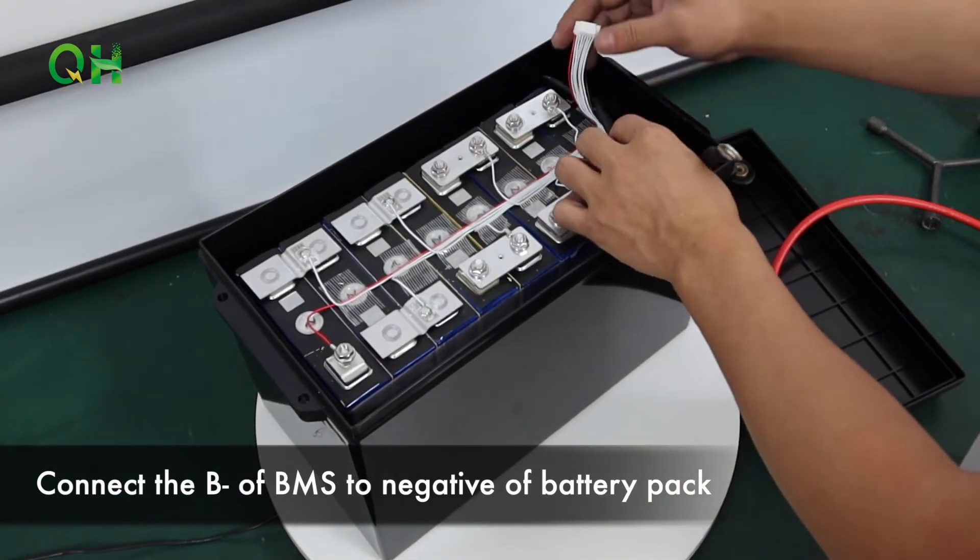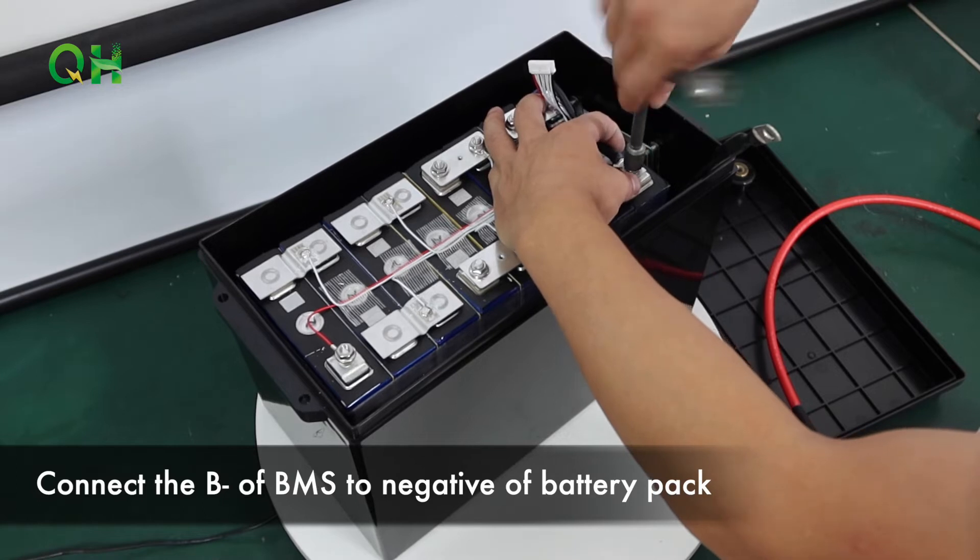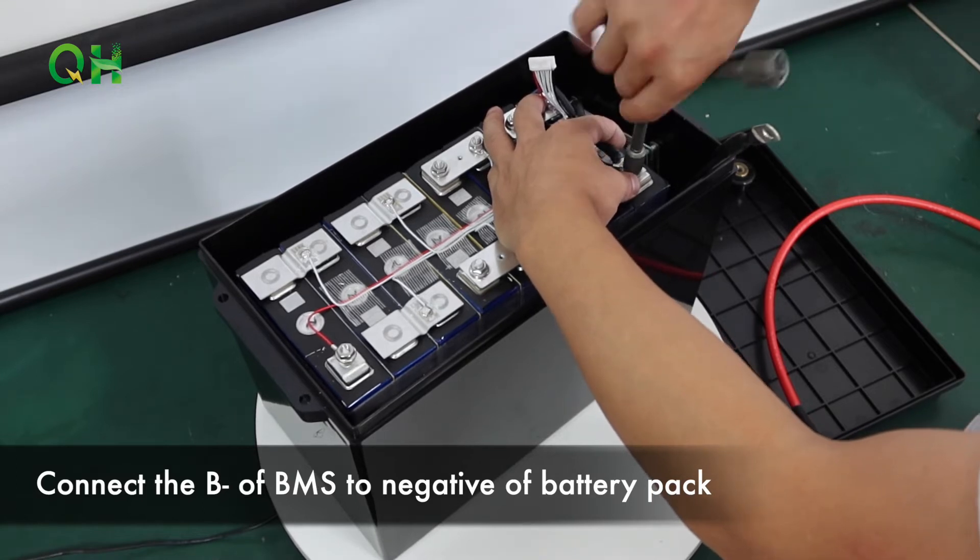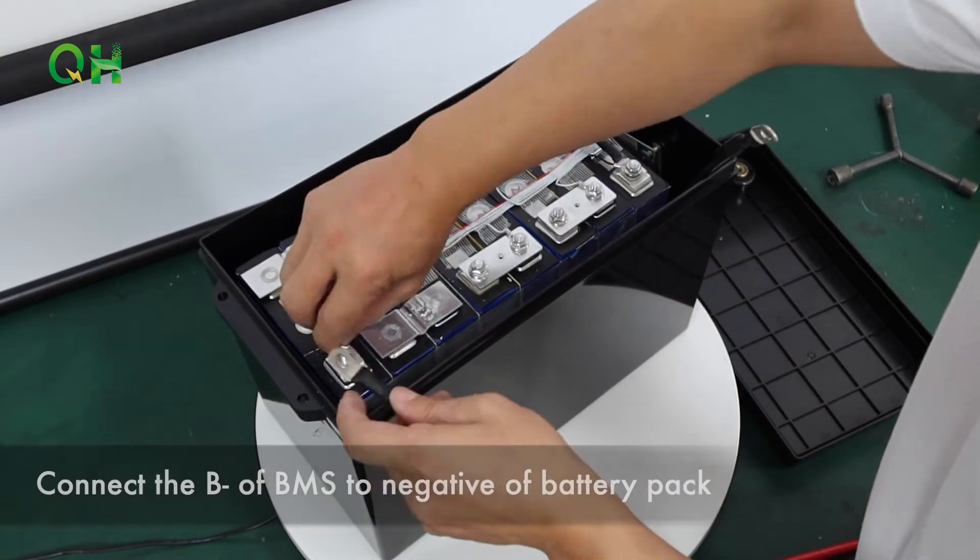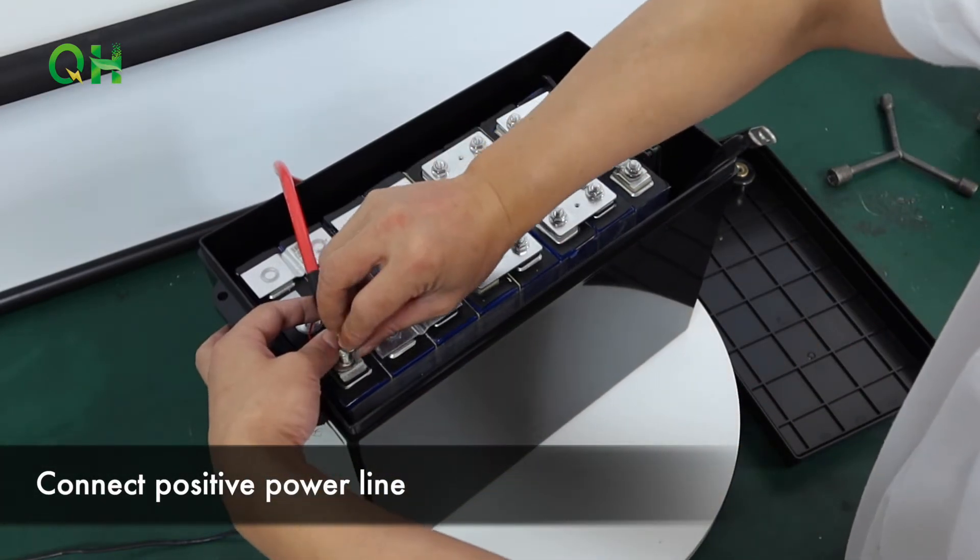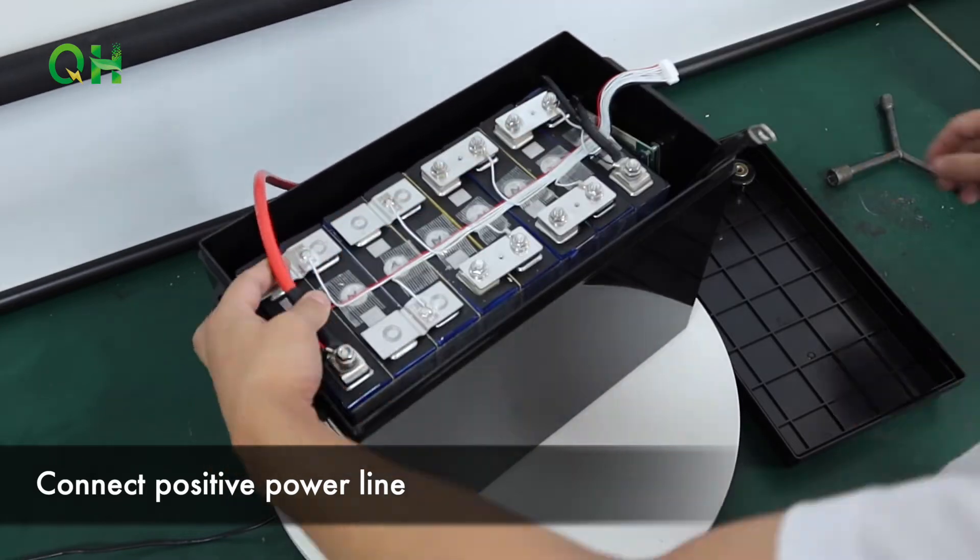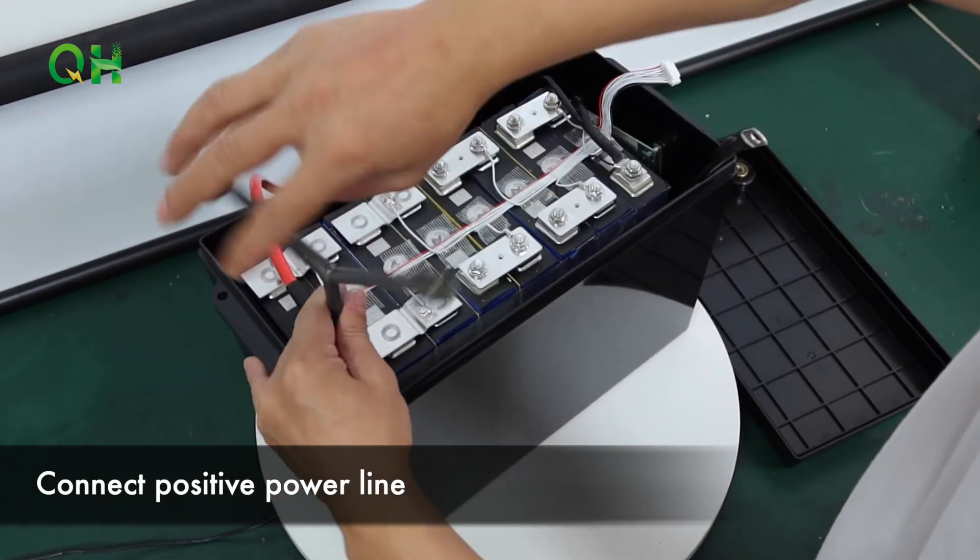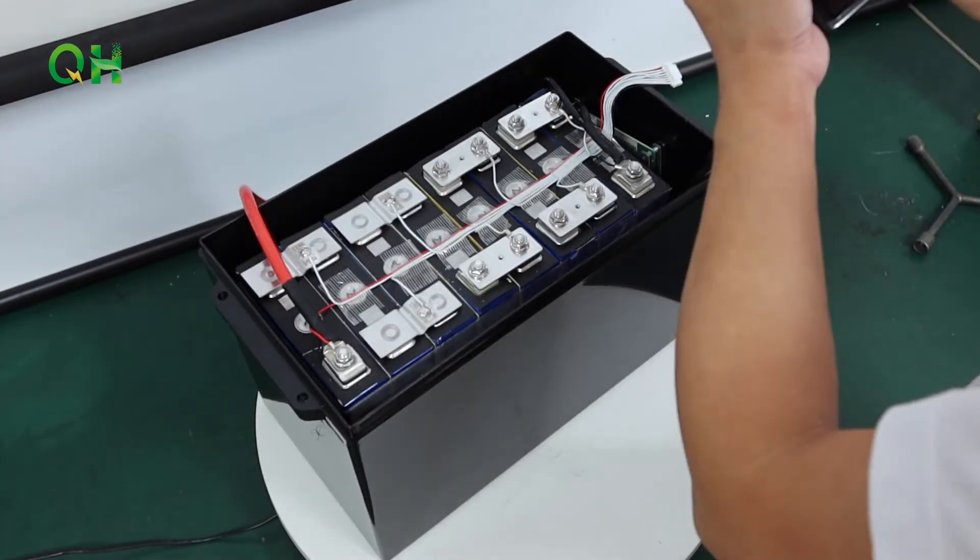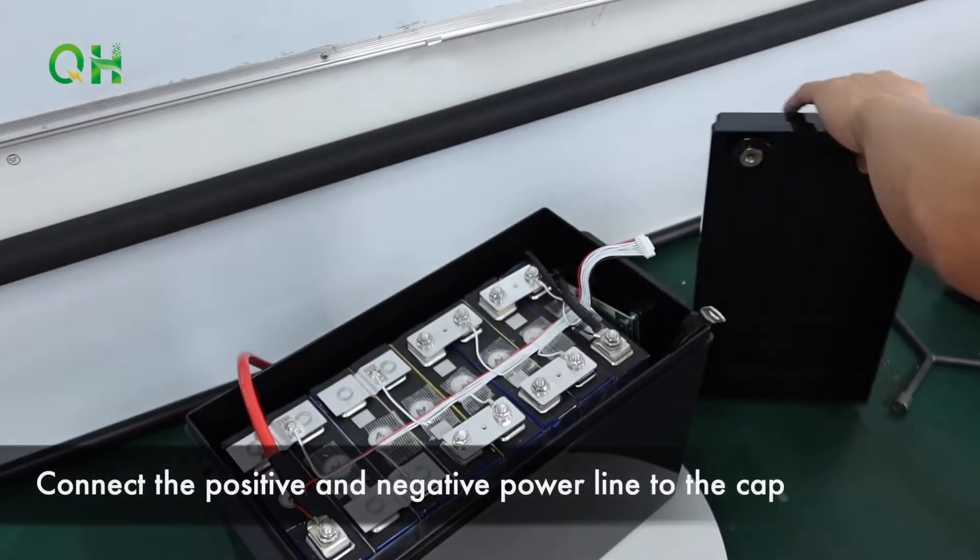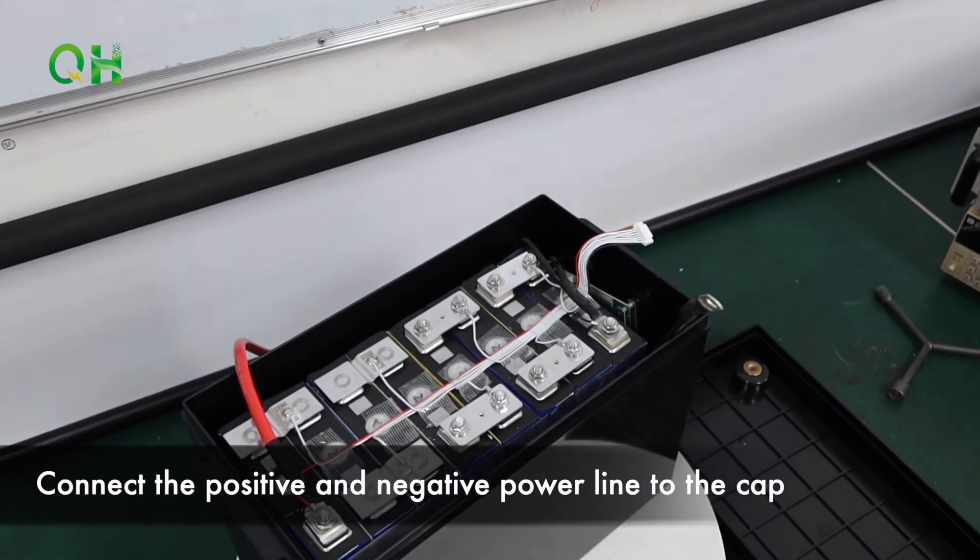Connect the B-minus of BMS to negative of the battery pack. Connect positive power line. Connect the positive and negative power line to the cap.